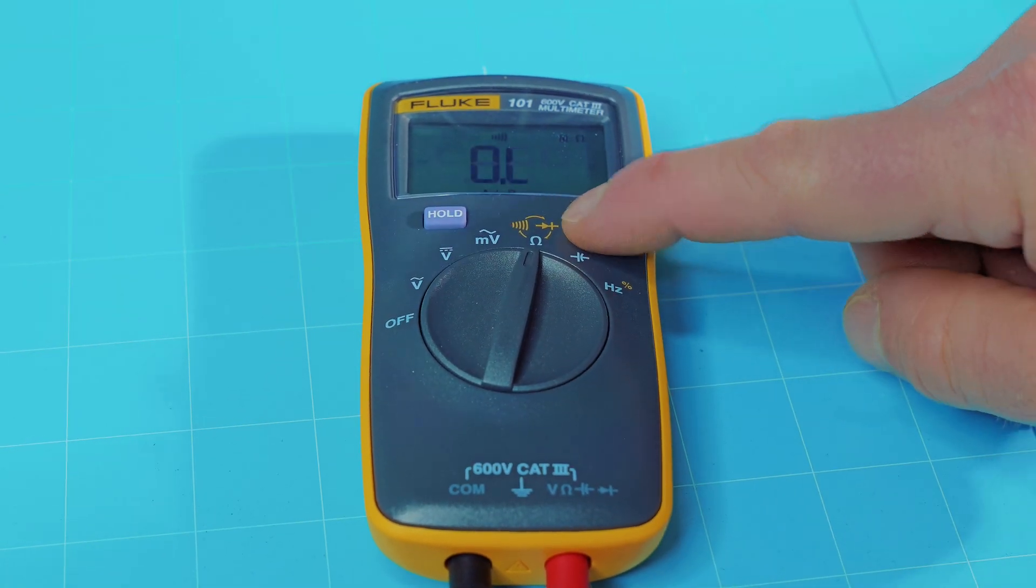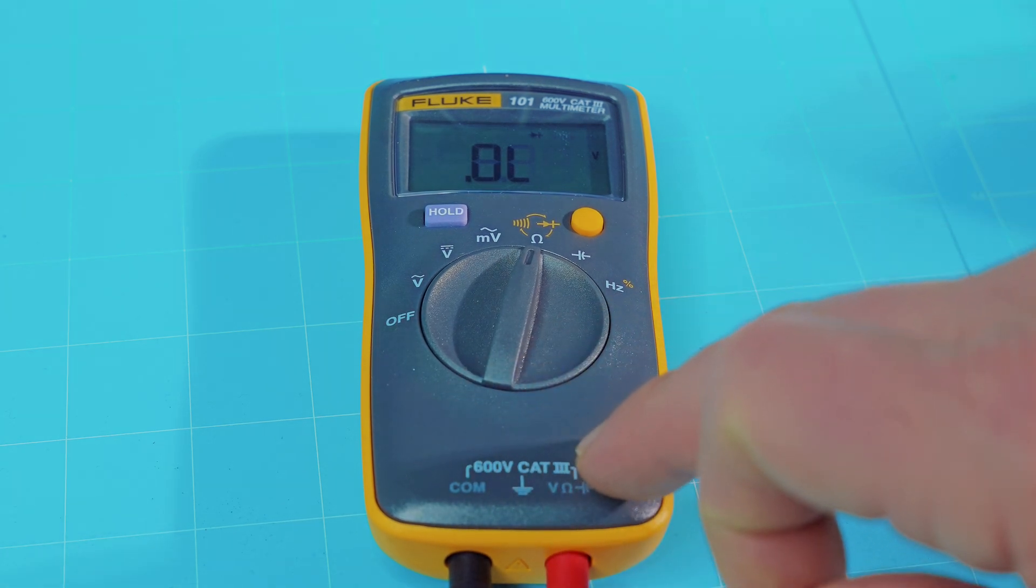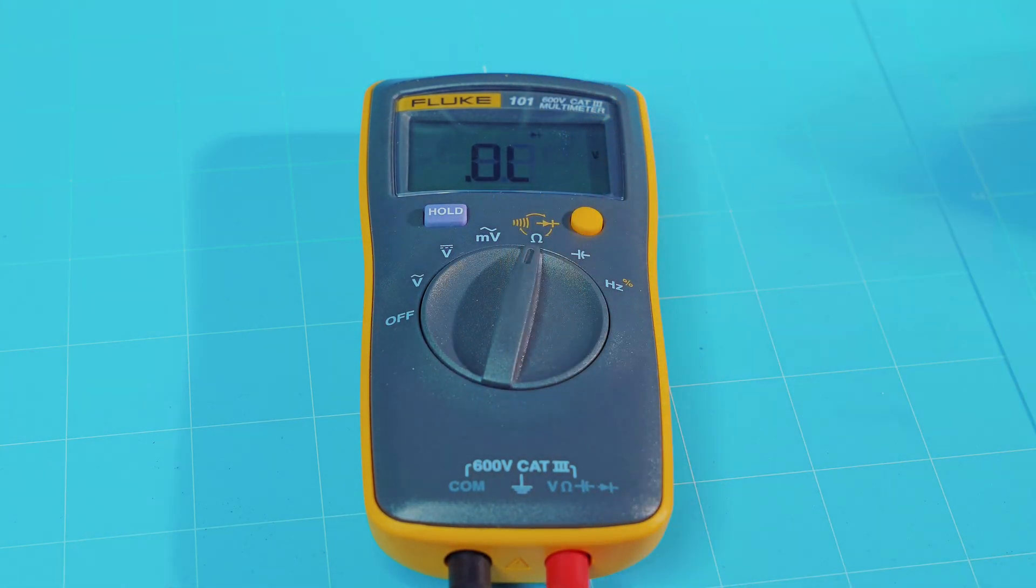For mine, I have to hit my shift button a few times. So now I'm ready to check it. So this meter, as you can see, does not have any holes where you can just insert your LED right into it.